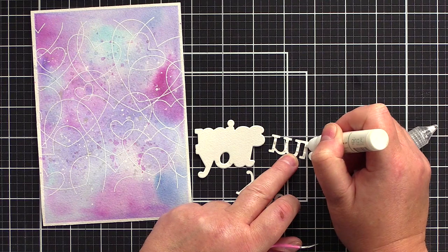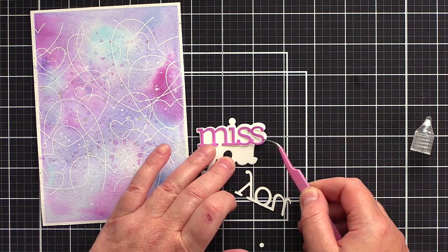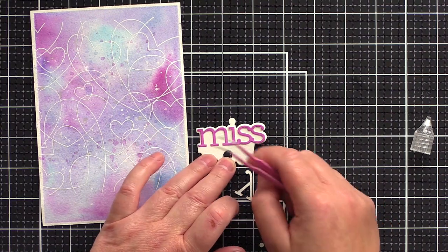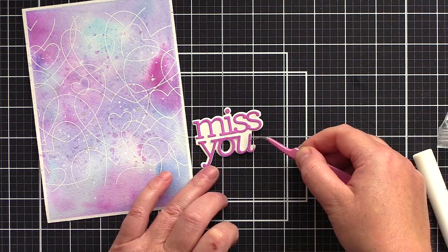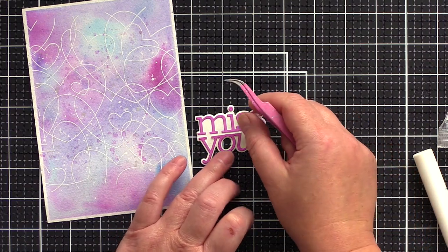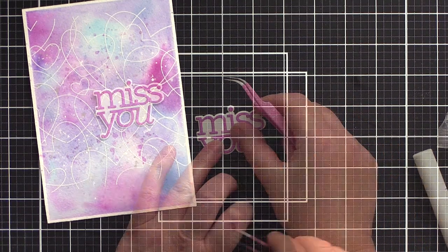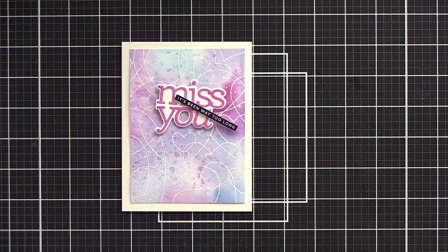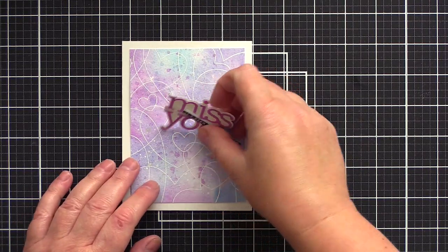I really like dies that have the background piece to the letters as it makes the sentiment stand out and pop from the background. I glued the letters to their background with Gina K Connect glue and then added foam adhesive to the back. I took a coordinating sentiment from the Reverse Miss You sentiment strips from CZ Design and added foam adhesive to the back of that too.